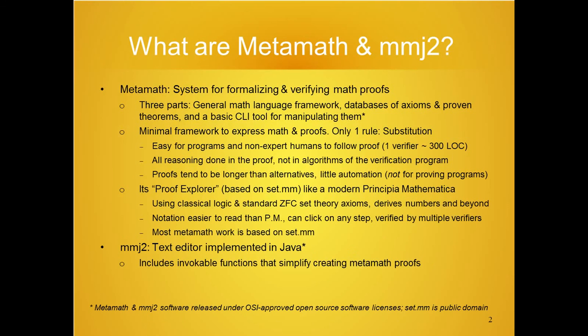What are MetaMath and MMJ2? MetaMath is a system for formalizing and verifying math proofs. Mathematicians are human — they can make mistakes. A verifier greatly increases the likelihood that a proof is correct, and also reveals the steps that traditional approaches hide.